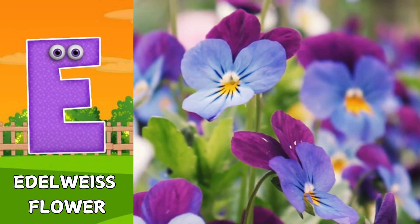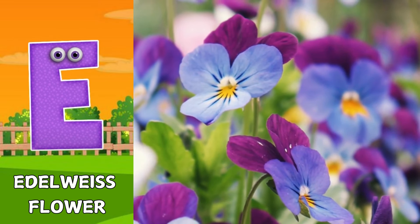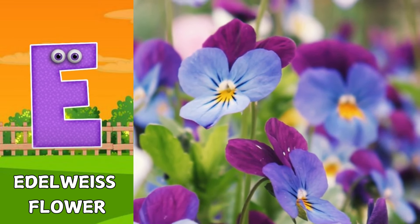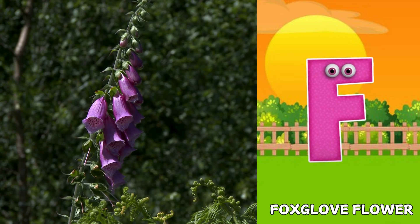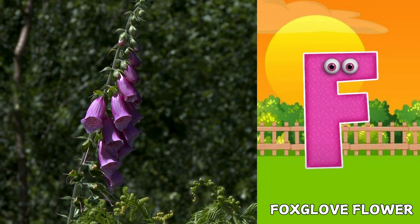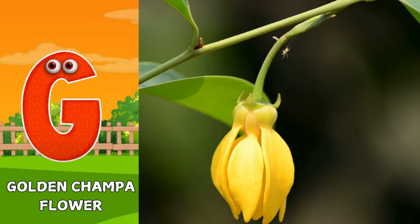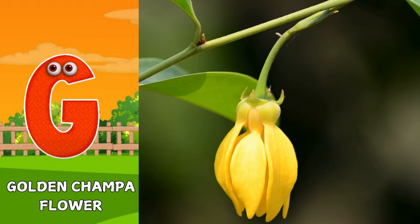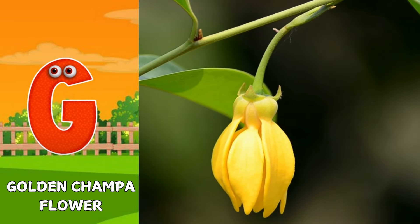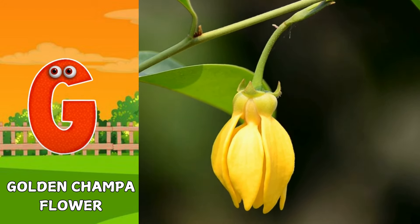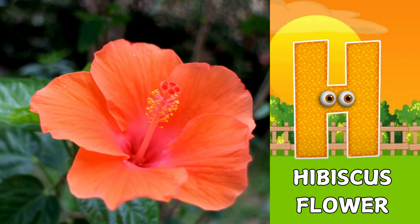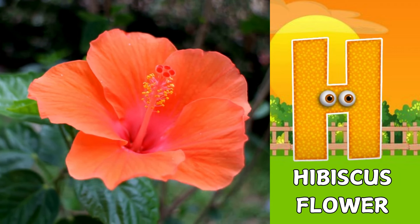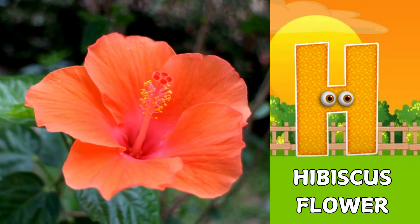E is for edelweiss flower. Eh. Edelweiss flower. F is for foxglove flower. Fuh. Foxglove flower. G is for golden compa flower. Guh. Golden compa flower. H is for hibiscus flower. Hah. Hibiscus flower.